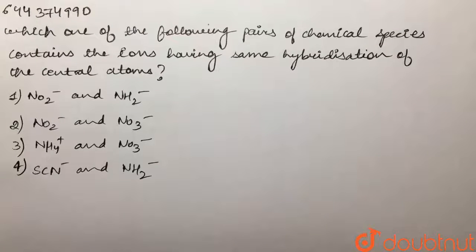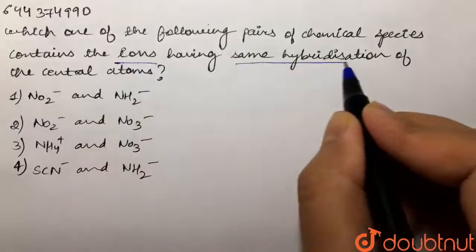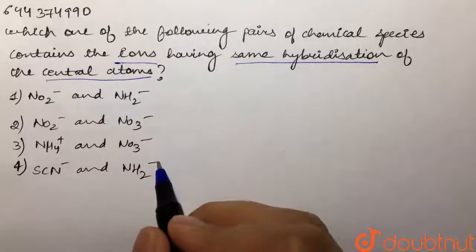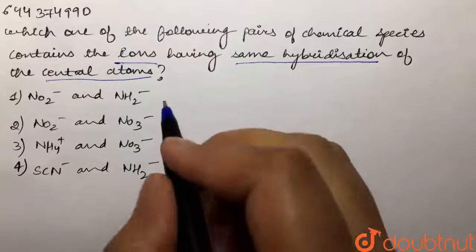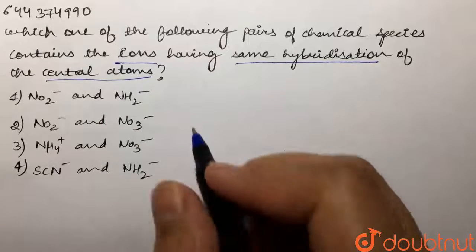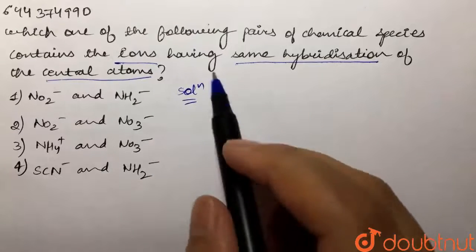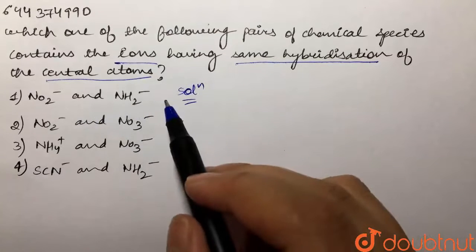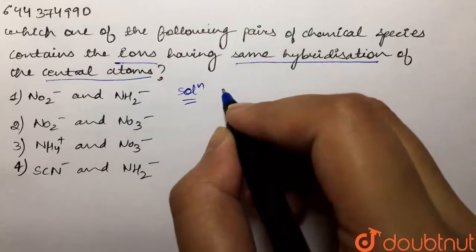Our question is: which one of the following pairs of chemical species contains the ions having the same hybridization of the central atoms? We are given pairs of chemical species and we are supposed to tell which pair has the ions that have the same hybridization of the central atom.